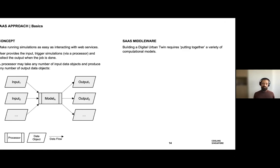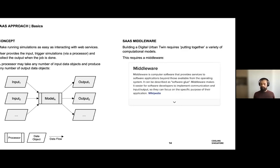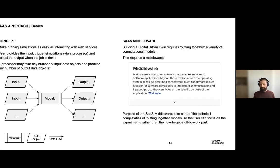In a digital urban twin, you have multiple models, converters, and all sorts of other processes, and somehow you have to put all these things together. This requires what in software engineering is referred to as middleware. Middleware is a glue — it brings together all the components and takes care of communication between them. In the context of digital urban twins, the purpose of the SaaS middleware is to take care of all the technical complexities, the putting-together part, so the user can focus on their experiments instead.